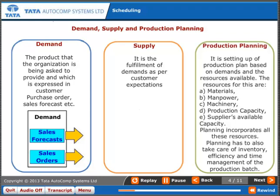Production planning is the setting up of a production plan based on demands and the resources available. The resources are: A. Materials, B. Manpower, C. Machinery, D. Production capacity, E. Suppliers' available capacity. Planning incorporates all these resources.